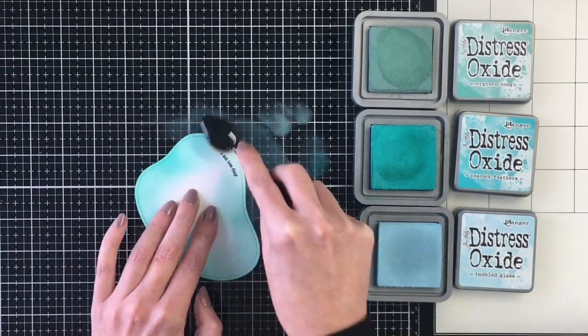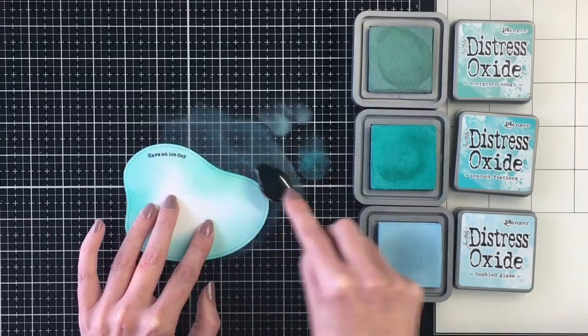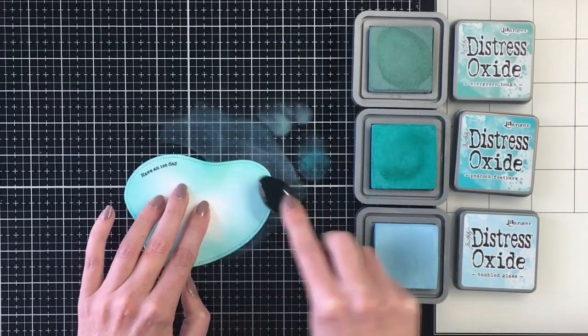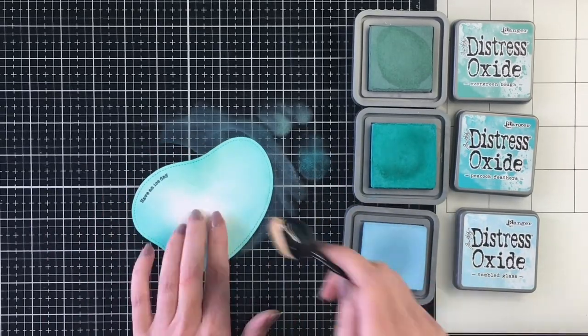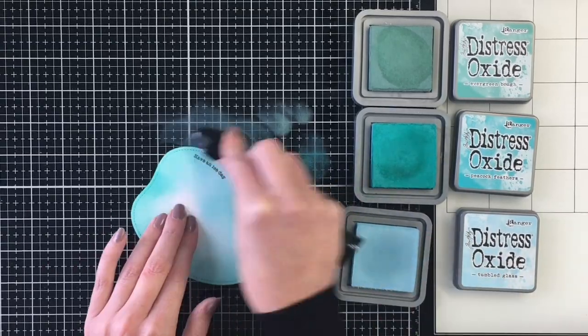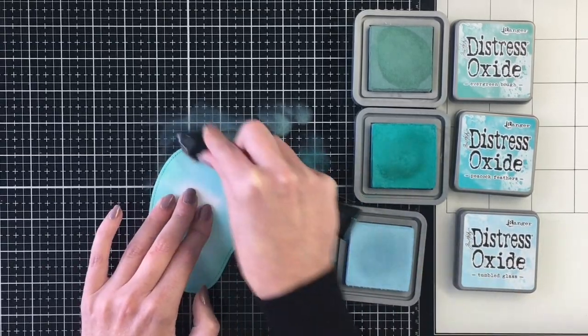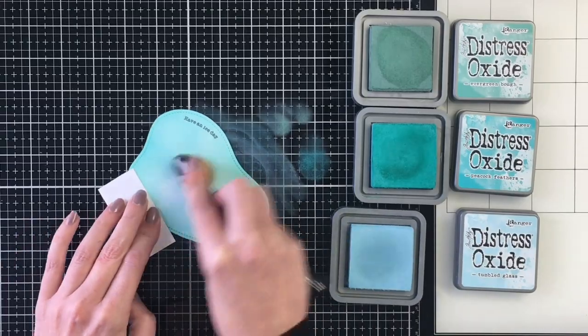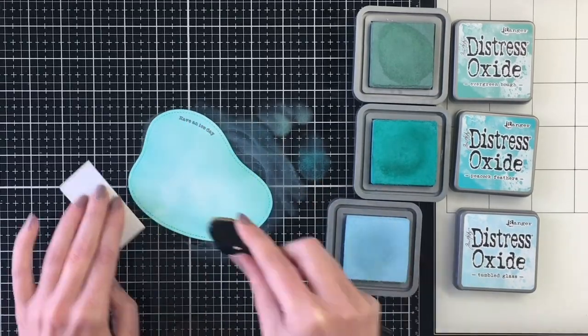Originally, I thought that I was going to leave quite a bit of this white. But in the end, you'll see that I end up covering the entire skating pond here with the distressed oxides. And I go a little bit heavier than I had expected. But I really like the look it gives in the end.